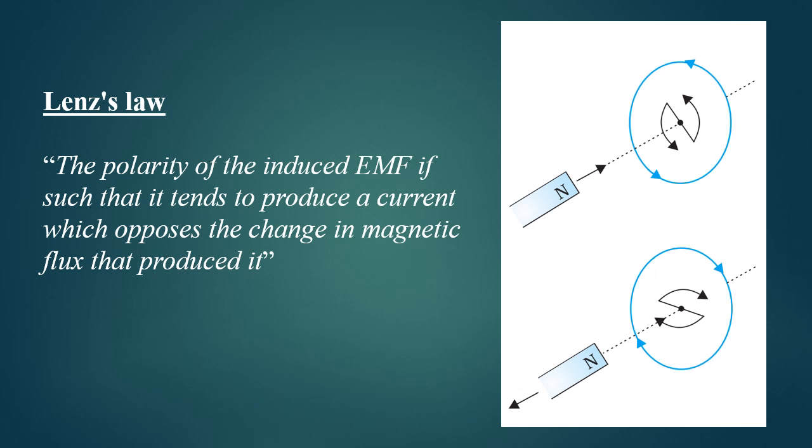Similarly, when the magnet is moved away from the coil, the induced current flows in clockwise direction and the coil behaves as south pole. Hence, the magnet is attracted towards the coil. Thus, the bar magnet motion is opposed by the coil.